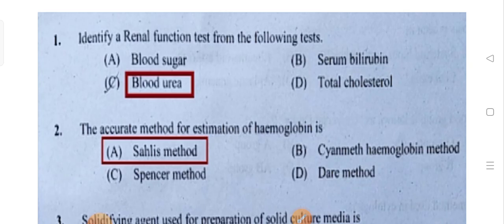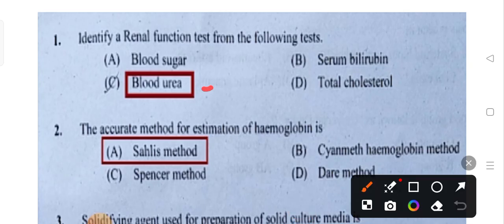Identify a renal function test from the following tests. The options are blood sugar, serum bilirubin, total cholesterol, and blood urea. Option C is the correct answer — blood urea is a renal function test.